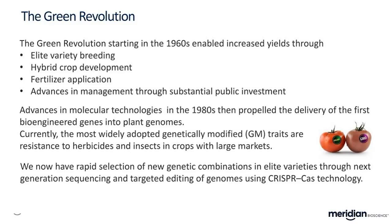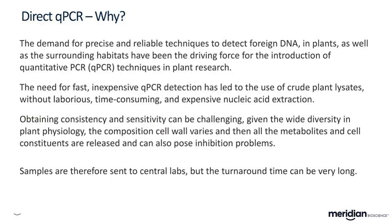Despite clear benefits to farmers and end users — things like drought-tolerant maize, bananas fortified with pro-vitamin A, non-browning apples — acceptance is still uncertain in certain countries, and the cultivation of genetically modified crops is carefully controlled. In some countries it's outright banned. Because of this, there has been a demand for precise and reliable techniques to detect GMOs, as well as other transgenic or pathogenic DNA in edible plants and surrounding habitats, and for detecting advantageous presence or copy number variations. This has led to the drive for qPCR techniques in plant research.